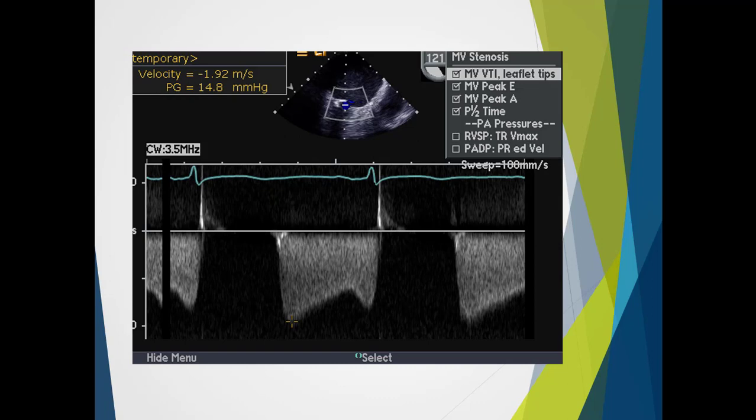The flow looks upside down because we're actually using a transesophageal echo here. And again, we can do a trace. We can measure the maximum pressure gradient, and we can measure the mean pressure gradients.